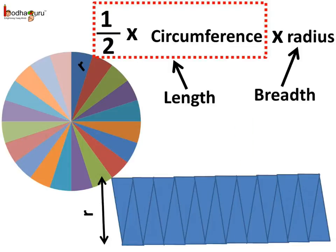So, we see the area of this rectangle is equal to length multiplied by breadth, which is equal to half the circumference multiplied by the radius of this cake.